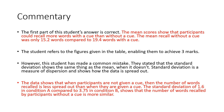The correct answer: the mean scores show that participants could recall more words with a cue than without (15.2 vs 19.4 words). For standard deviation: the data shows that when participants are not given a cue, the number of words recalled is less spread out. The SD of 1.6 in condition A compared to 3.75 in condition B shows words recalled without a cue are more similar — the smaller the standard deviation, the less spread out the data; the bigger the SD, the more spread out.